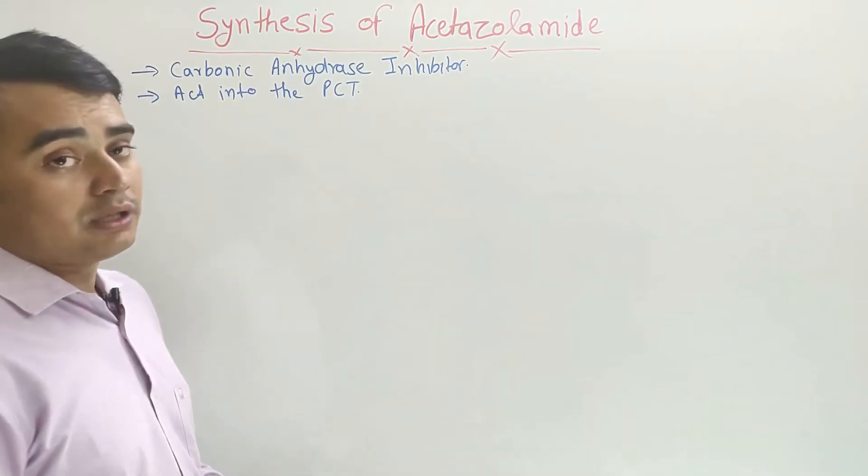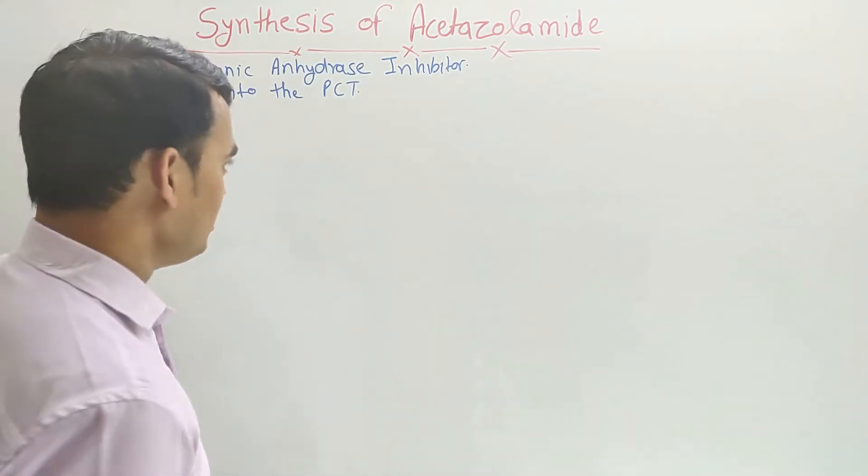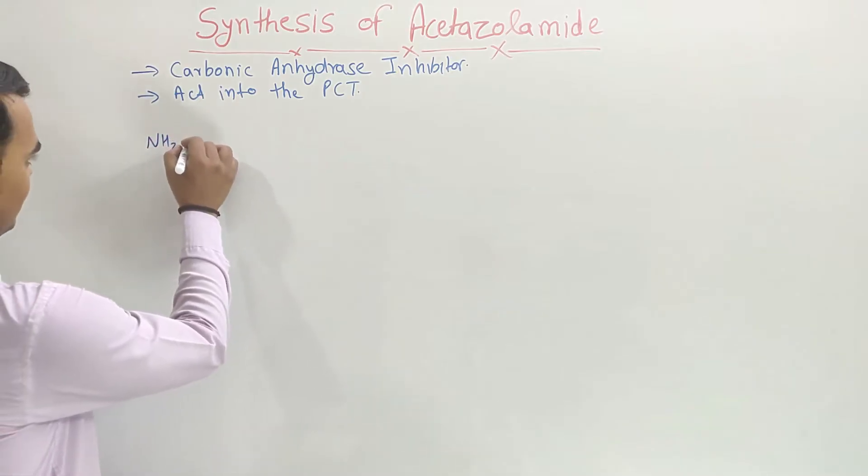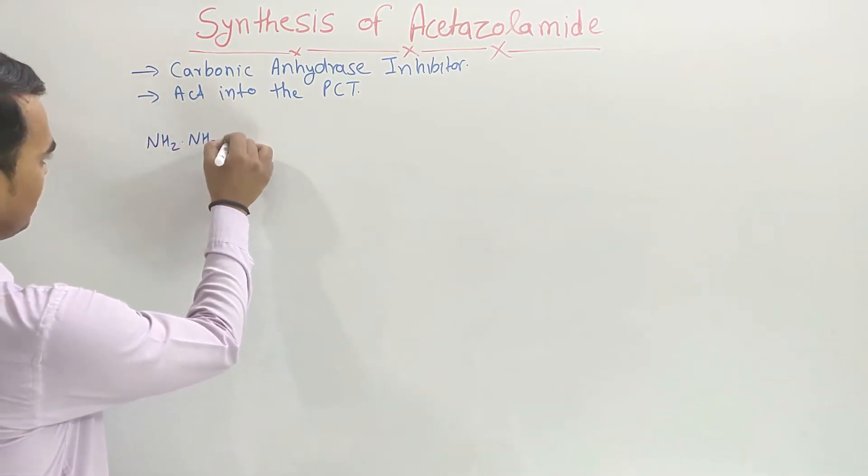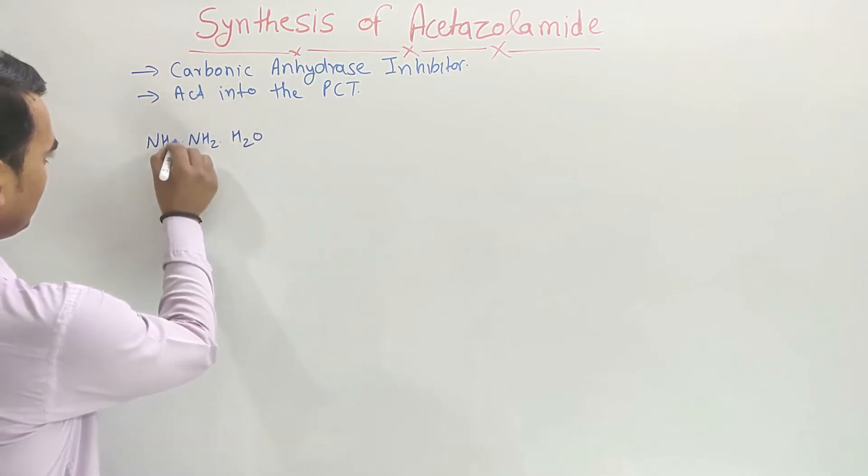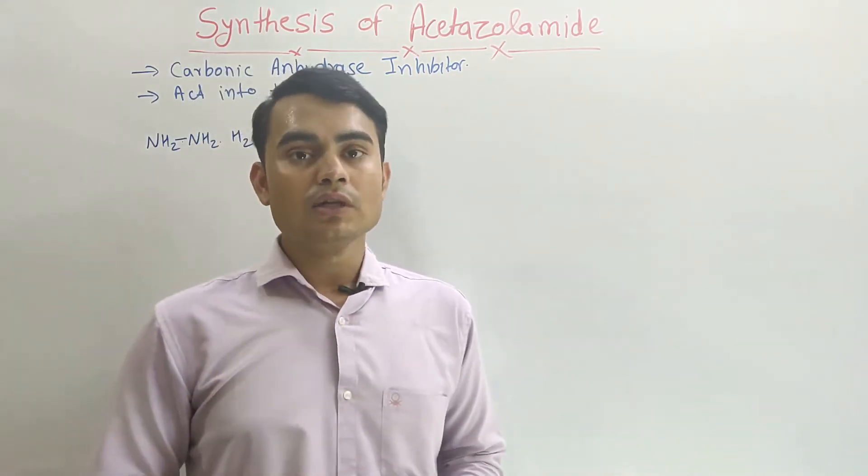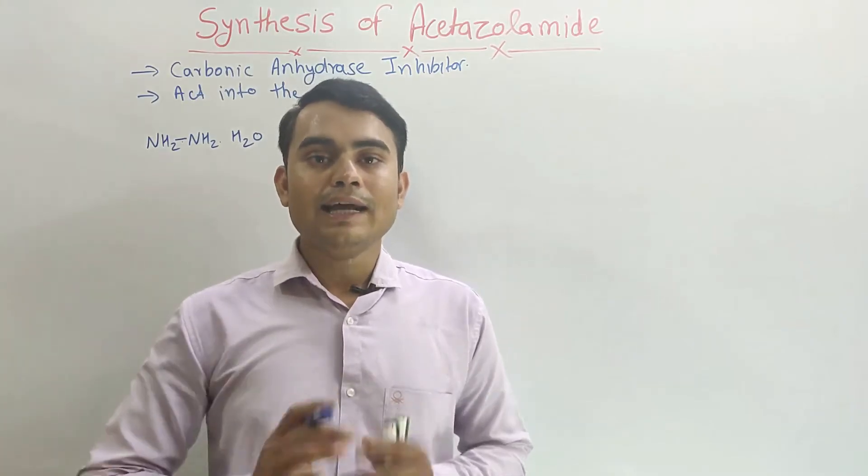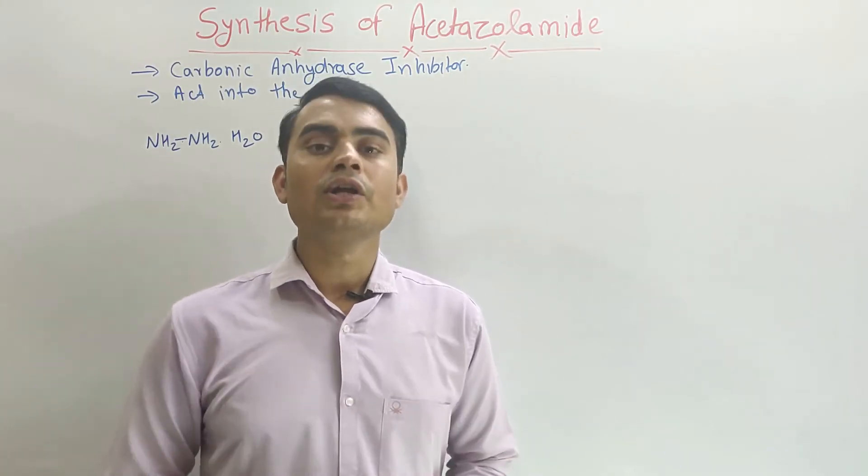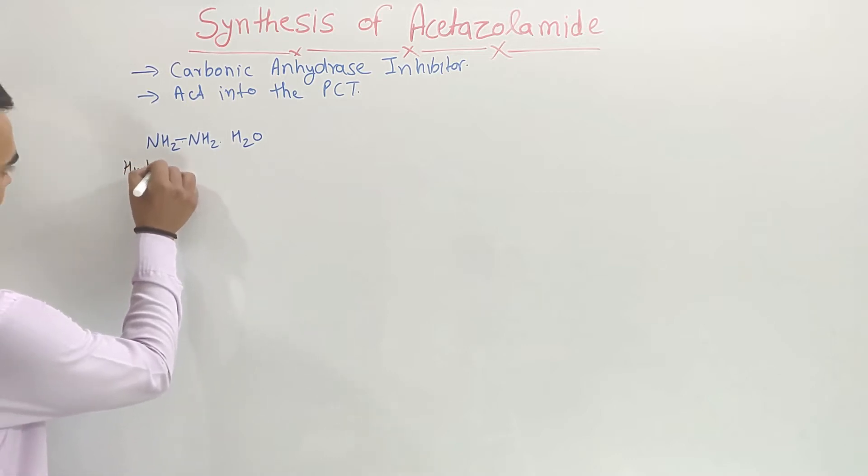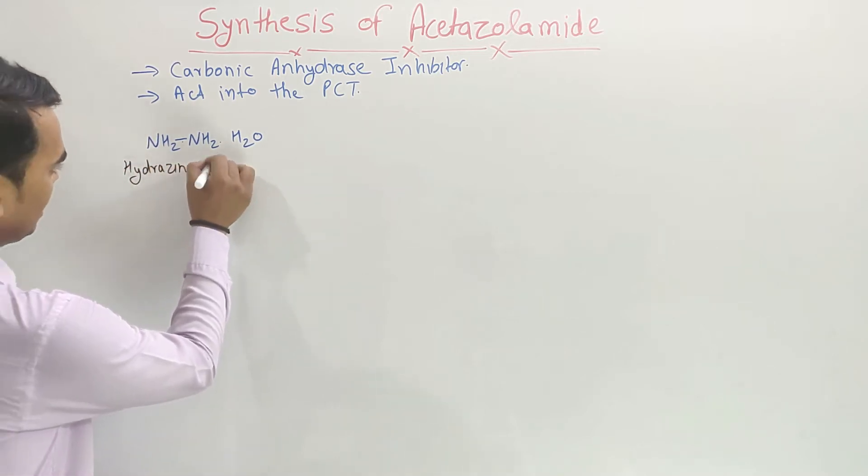Now let us have a look on the synthesis of acetazolamide. The synthesis of acetazolamide is starting from hydrazine hydrate. Why is it in the hydrate form? Because anhydrous hydrazine is highly reactive. We cannot use it for the reaction, so here we have to use hydrazine hydrate.